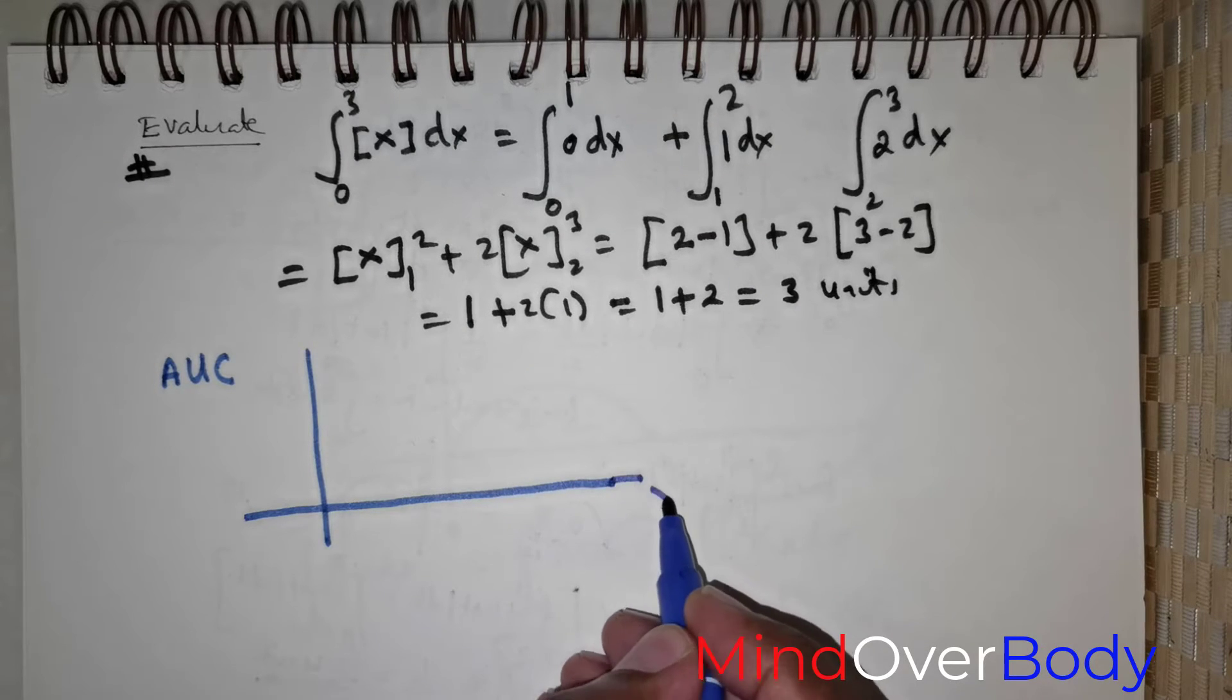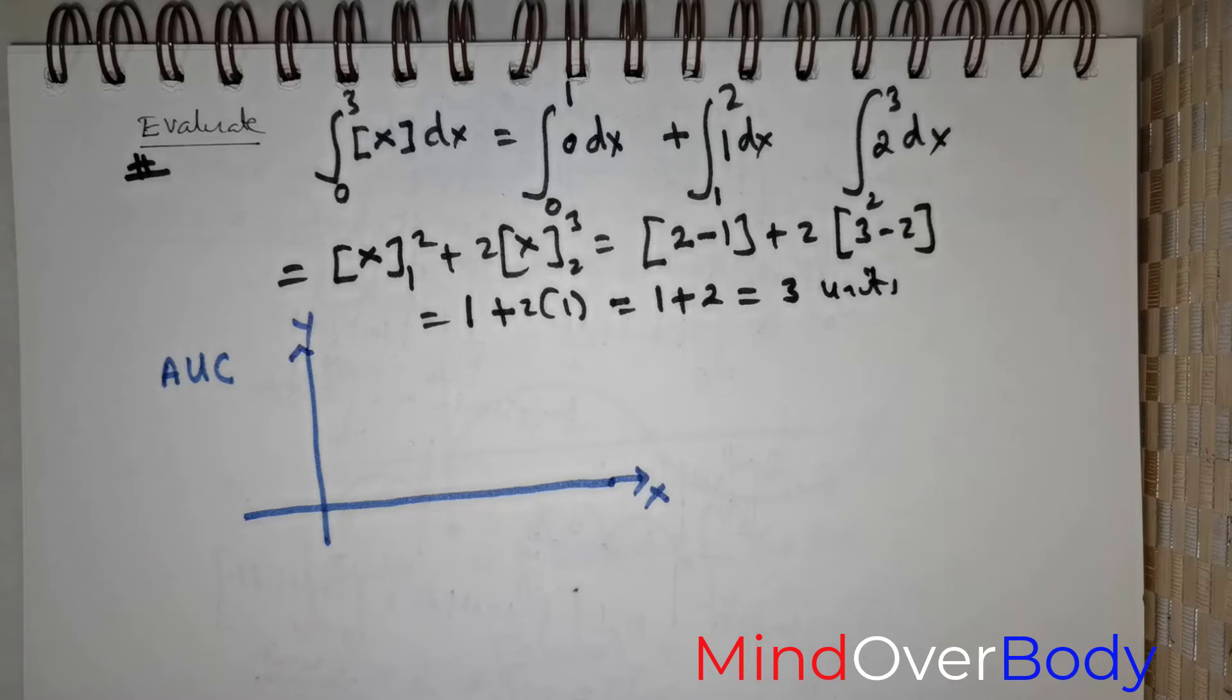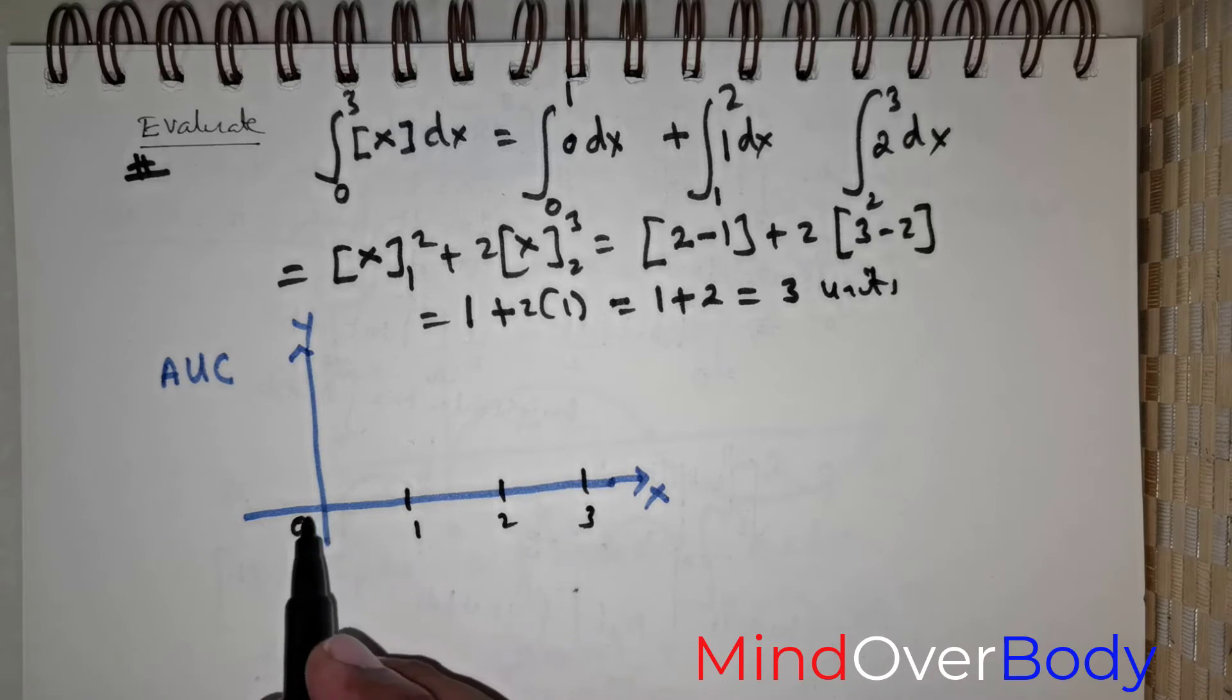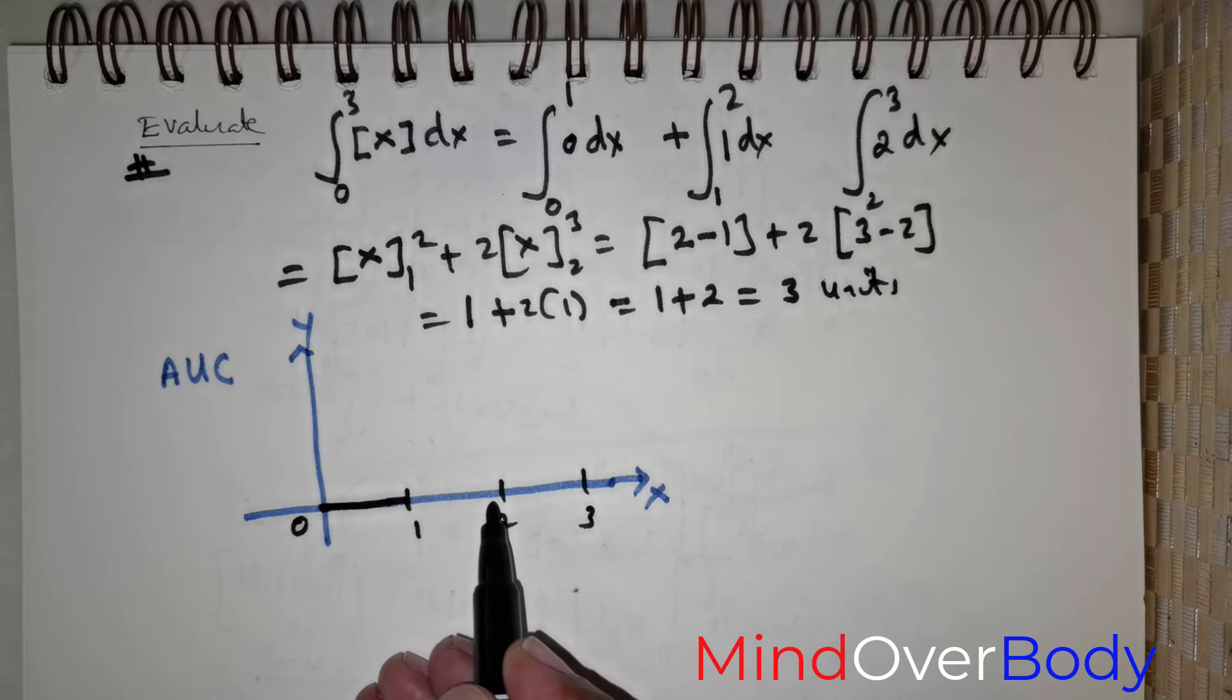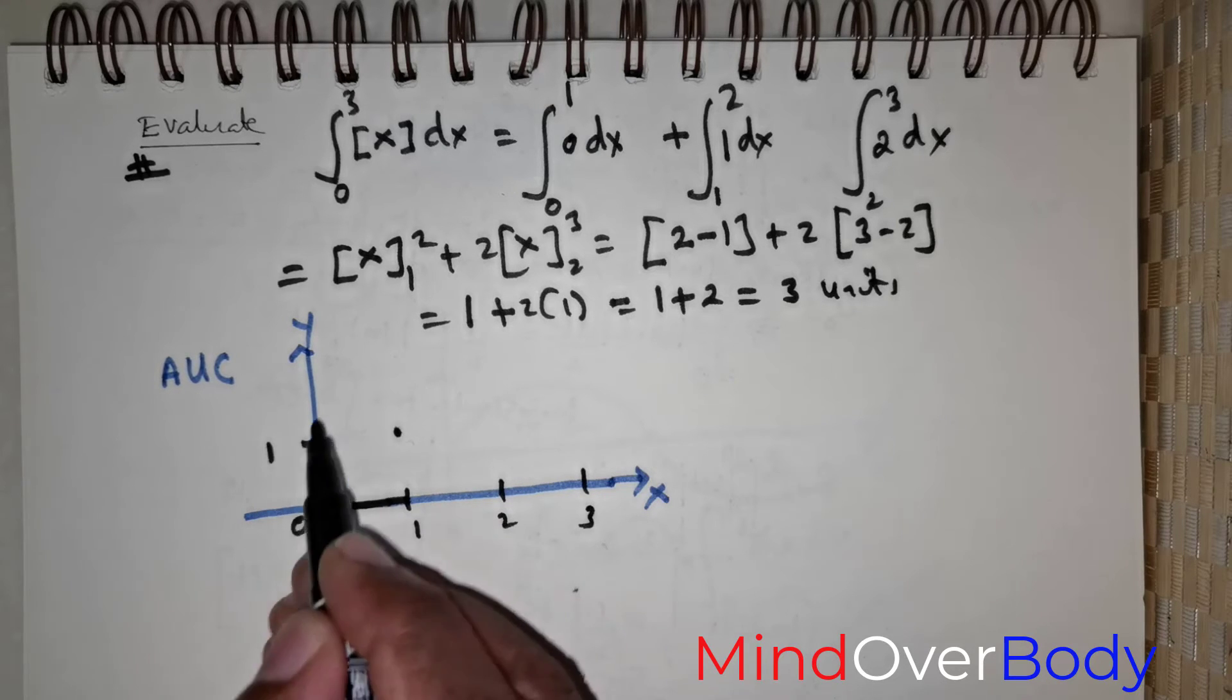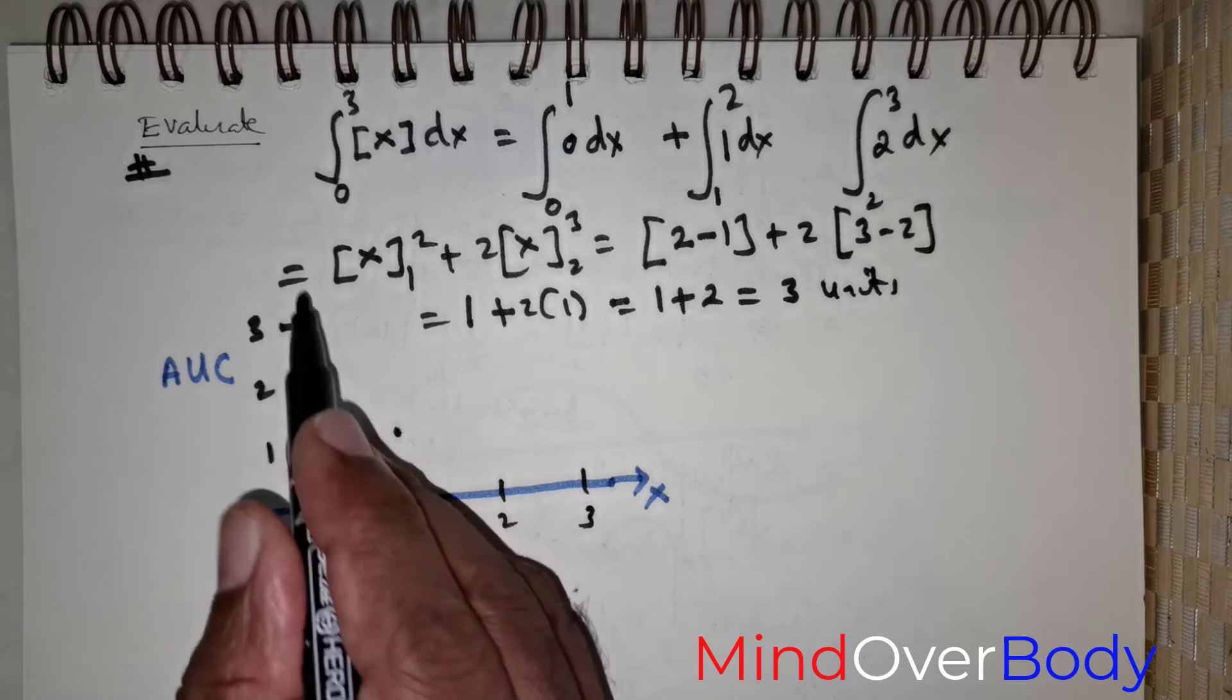Let me just draw the x-axis and the y-axis. And let me mention the points. 0 is going to be 1. This is going to be 2. This is going to be 3. Now, definitely 0 to 1, this is going to be 0. And 1 to 2, the region is going to be 1. So, this is 1, this is 2, and we got the 0 to 3 over there.